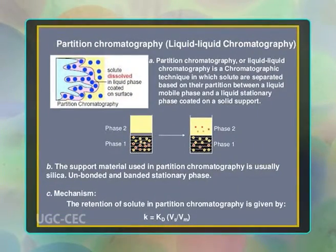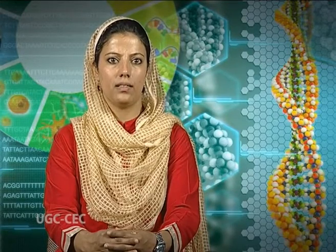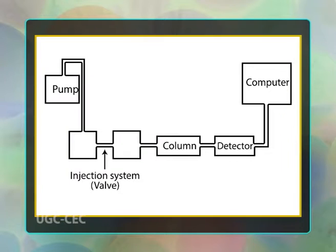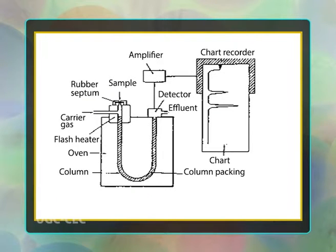The chromatography system differs based on the physical states of the phases used. Homogeneous techniques have both stationary and mobile phase as liquid — for example, liquid-liquid chromatography. Heterogeneous techniques employ different stationary and mobile phases — for example, solid-liquid chromatography, solid-gas chromatography, liquid-gas chromatography, etc.